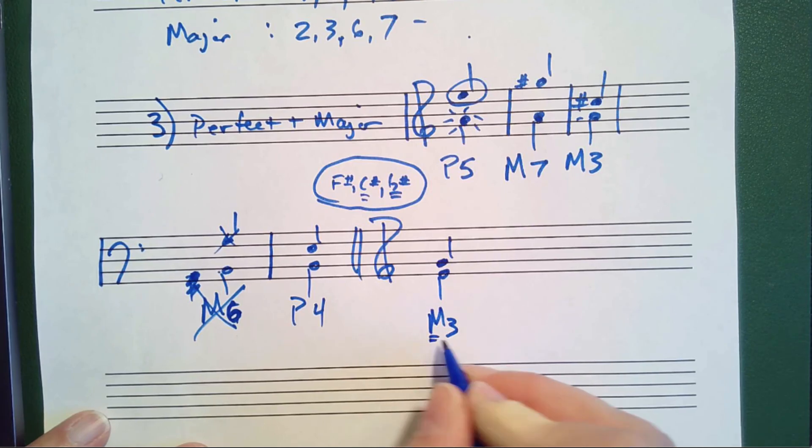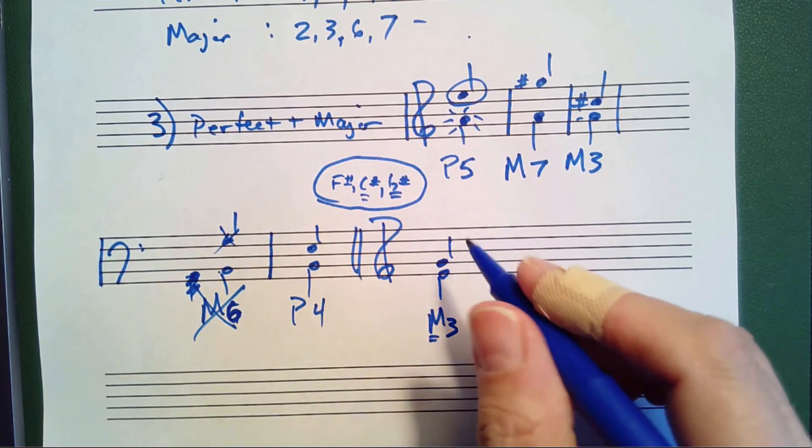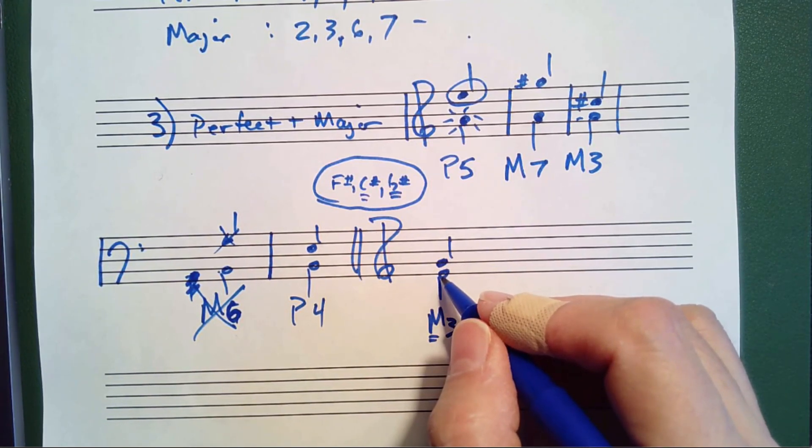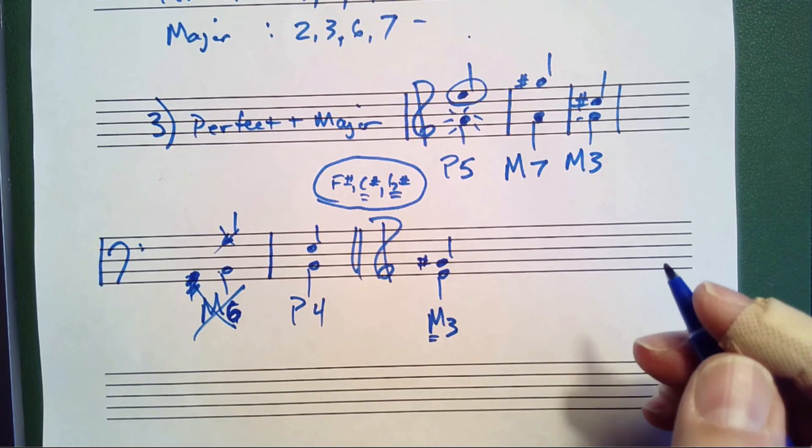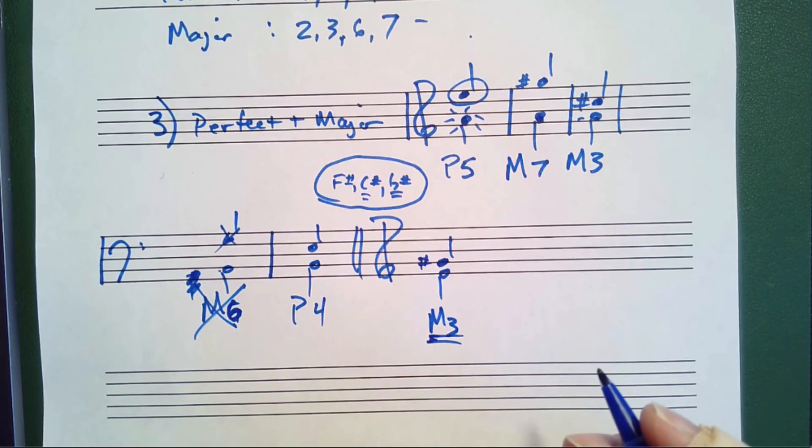Step number one, E, F, G has to be some kind of G. Step number two, to make it major, we need to think of the key signature of the bottom note, which is F sharp, C sharp, G sharp, D sharp. By putting the sharp on, that makes that a major third.